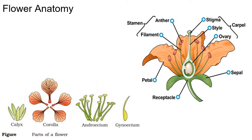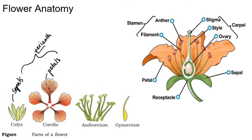Here's a quick review: the calyx is made up of sepals and is the outermost whorl. The corolla is made up of petals. Together they are called the perianth — 'peri' means around and 'anth' means flower, so it's the outside going around the flower. The androecium is composed of stamens, and the gynoecium is composed of carpels.